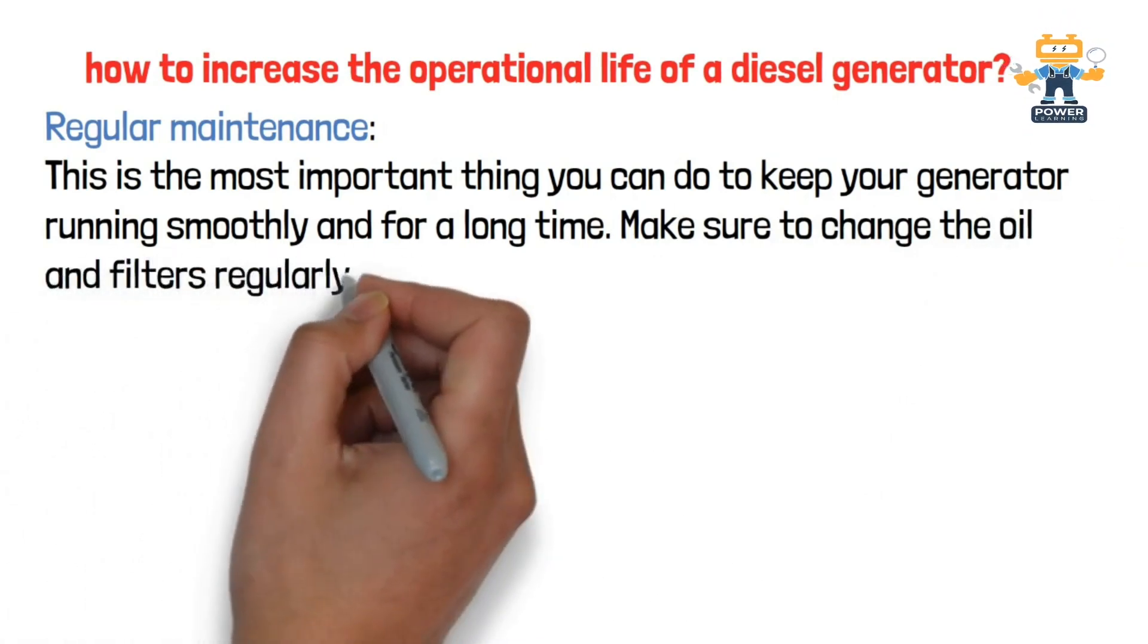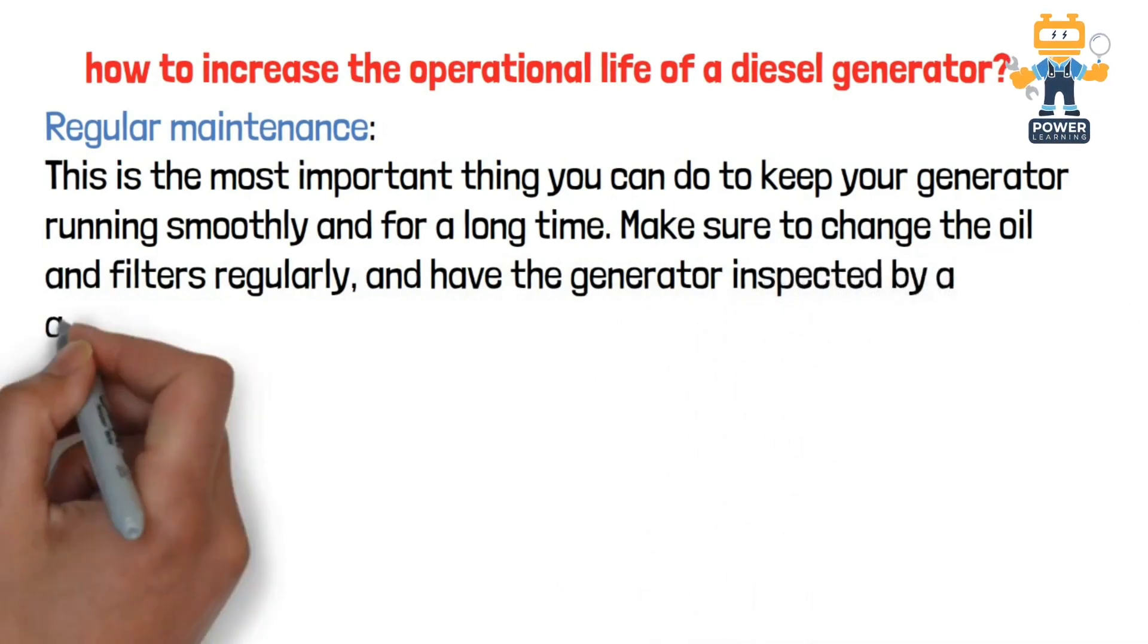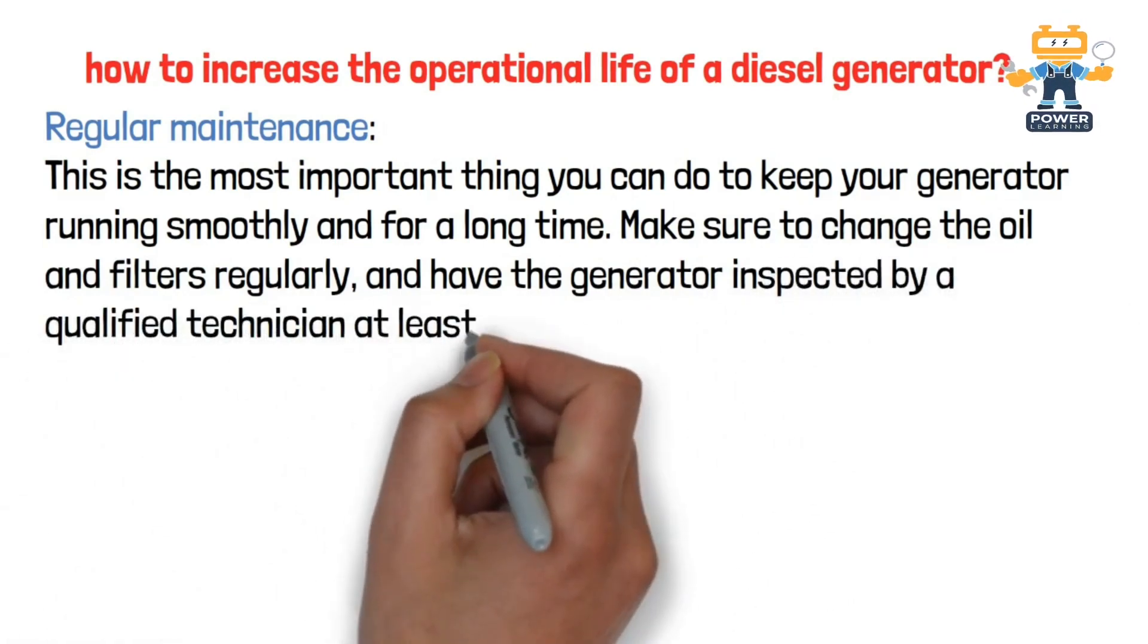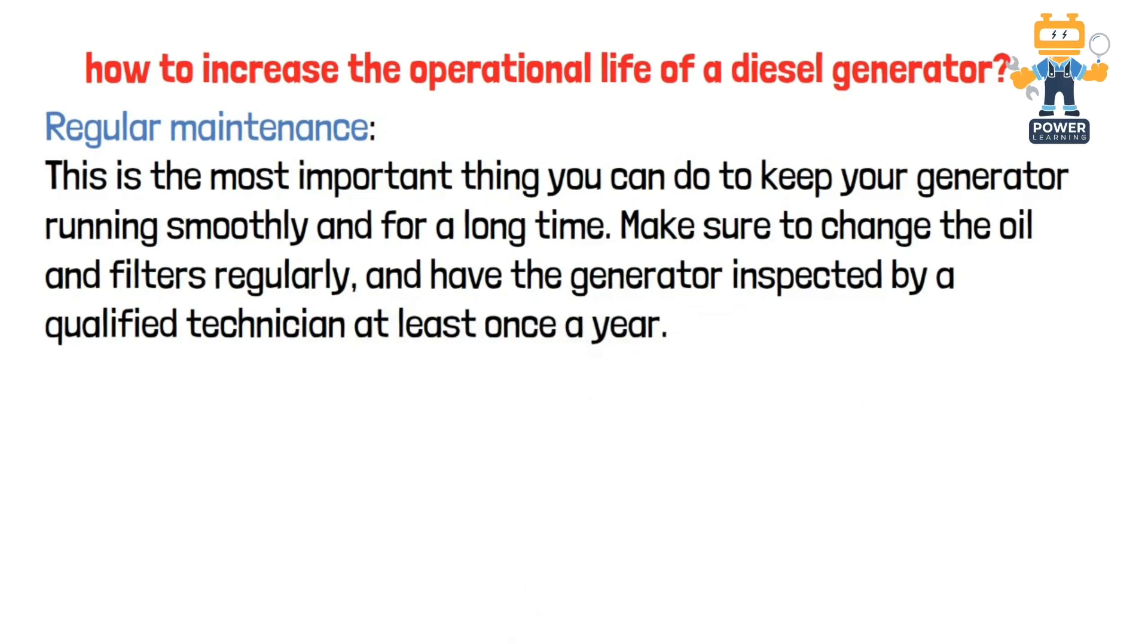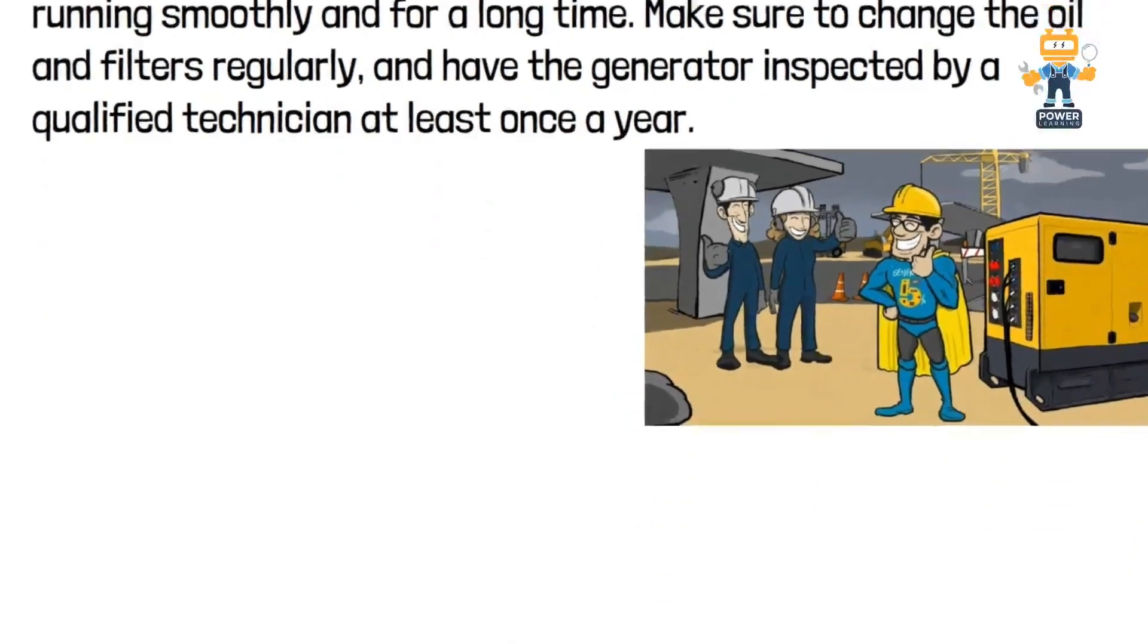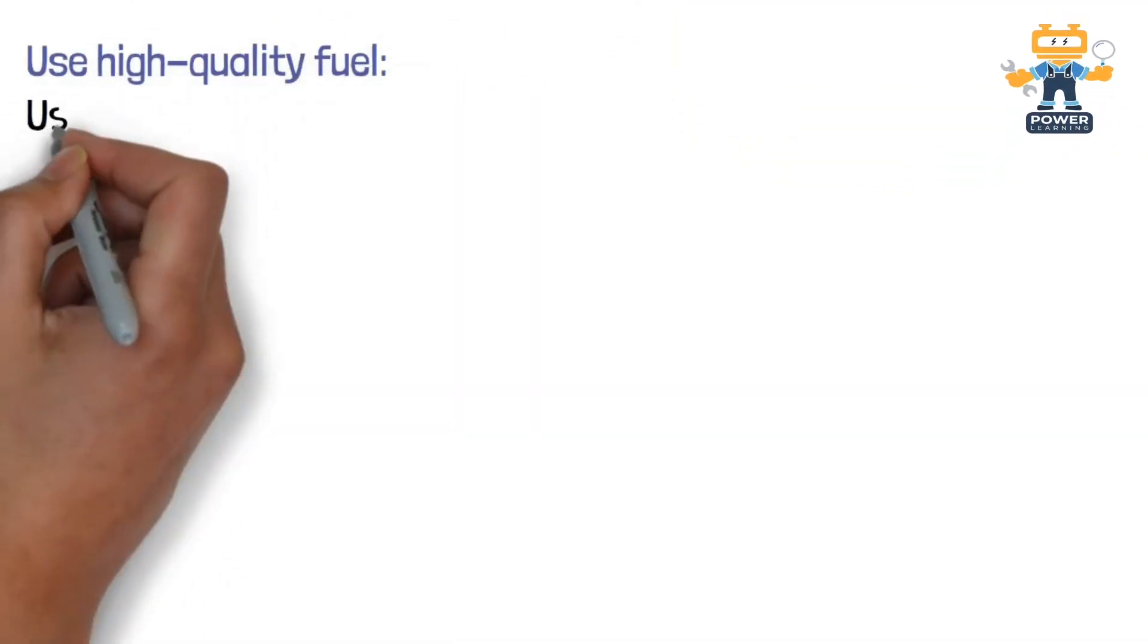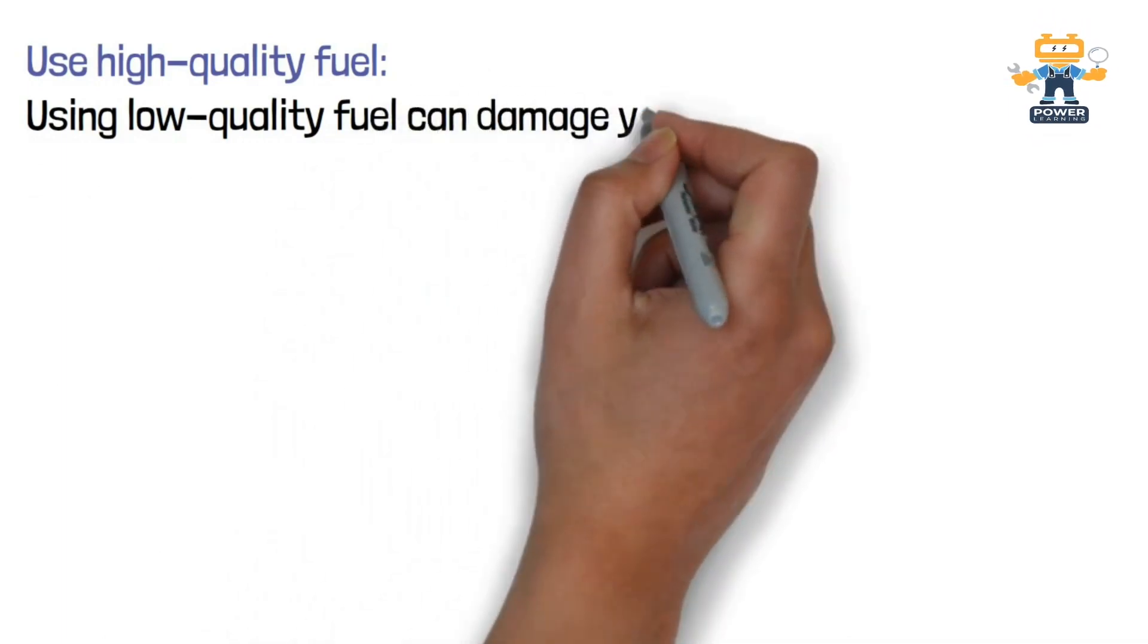Regular maintenance is the most important thing you can do to keep your generator running smoothly for a long time. Make sure to change the oil and filter regularly, and have the generator inspected by a qualified technician at least once a year. The first point is: regular maintenance is very important for your generator.